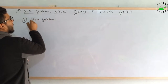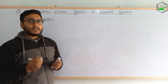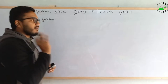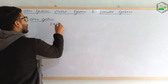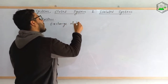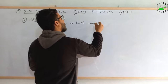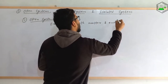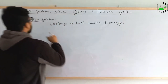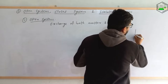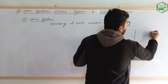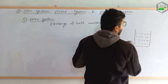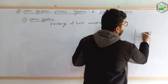First of all, let's understand open system. An open system is the system in which there is exchange of both matter and energy between the system and surrounding. Let me explain that with a diagram. Suppose this is the system part and around it there is surrounding, and this is the boundary.